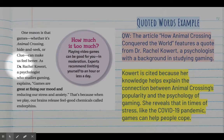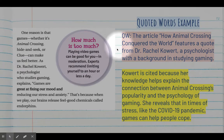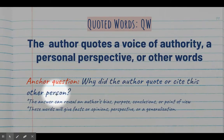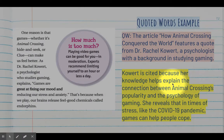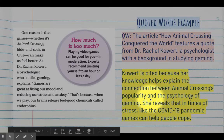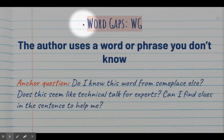Here's an example from a text we read about Animal Crossing. In it, Dr. Rachel Cohort, a psychologist who studies gaming, explains: 'Games are great at fixing our mood and reducing our stress and anxiety.' I put QW to cite the signpost I identified and explained that Dr. Rachel Cohort was quoted in the Animal Crossing article. My signpost answer: Cohort is cited because her knowledge helps explain the connection between Animal Crossing's popularity and the psychology of gaming — she reveals that in times of stress like the COVID-19 pandemic, games can help people cope.